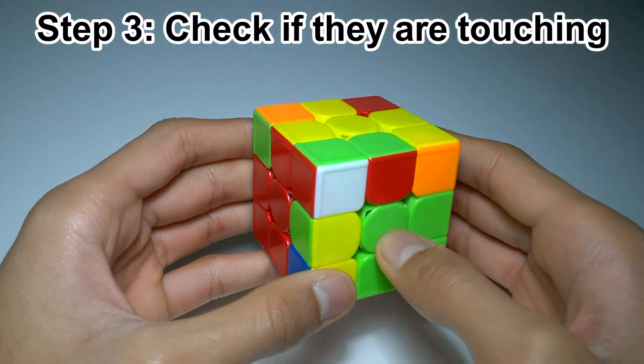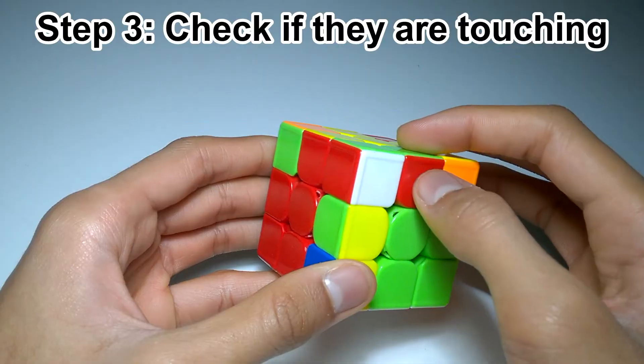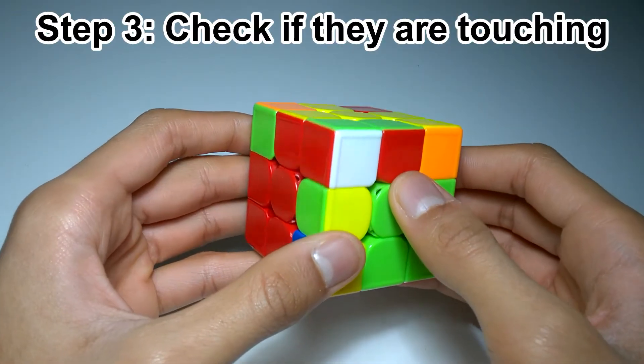Step three is to check if the corner and the edge are touching. If they are touching, they may already be paired up. If this is the case, skip to step six.